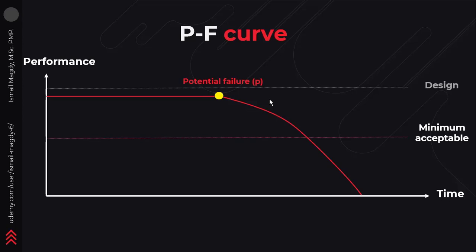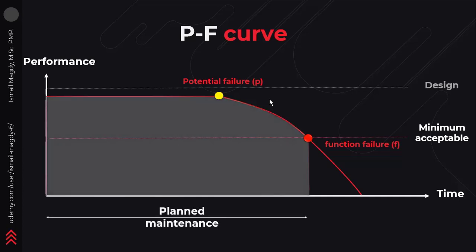At a certain point, we can see that the performance of the equipment will start to deteriorate, and the starting point here is what we call P, which stands for potential failure. The deterioration will keep going till the performance level goes lower than the minimum acceptable level of performance, and this is what we call F, which stands for function failure, because it means that this equipment right now can't deliver the minimum required output we need out of it. The maintenance process is carried out through the whole life of the equipment, and any maintenance carried out before functional failure is what we call planned maintenance, while any maintenance carried out after functional failure is what we call unplanned maintenance, or corrective maintenance, because it was a repair task carried out after a failure has already occurred.